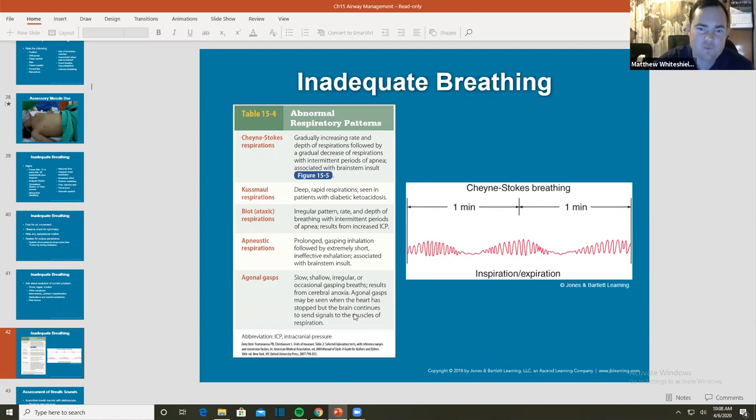Agonal gasps may be seen when the heart has stopped but the brain continues to send signals to muscles of respiration. Basically what's happening is this patient with agonal respirations could be dead. Heart doesn't work. The patient went into cardiac arrest. The brain is saying, dude, we need to live, breathe, breathe, breathe. So it's trying to coach the body and trying to save itself. Remember your body's constantly trying to maintain homeostasis. When your body starts getting all of this carbon dioxide buildup and acidosis, your brain is like, shit dude, we need to get rid of it.